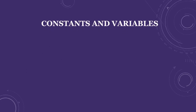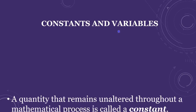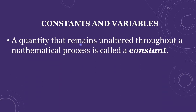We have already learned the definitions of constants and variables in algebra. Constants means fixed value; variables means it takes various values. A quantity that remains unaltered throughout a mathematical process is called a constant. For example, x is equal to 5 — that is called a constant.